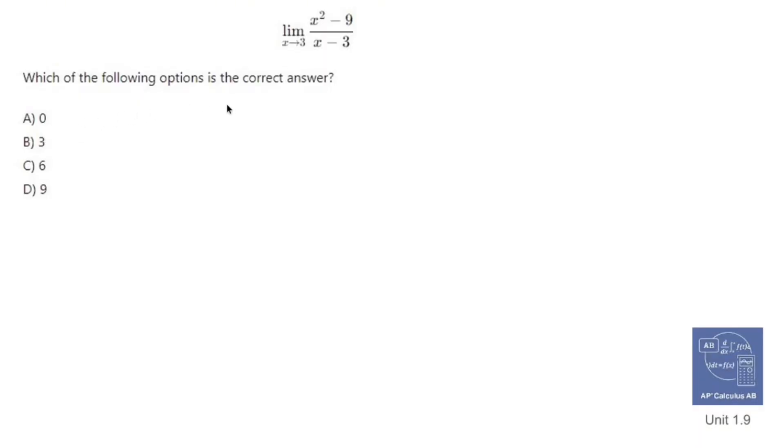Which of the following options is the correct answer? We are being asked to find the limit as x approaches 3 of x squared minus 9 over x minus 3. Well, if I were to just plug in 3, I'd get 0 over 0. That's indeterminate. That's no good.